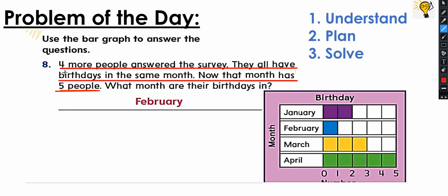So we know that four more people answered the survey. They all have birthdays in the same month. Now that month has five people. We need to also find out something, so we have to circle the question: 'What month are their birthdays in?' So that's the question. We need to find out what is the month.